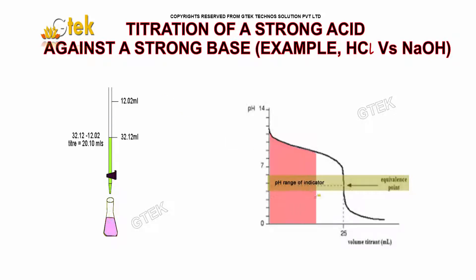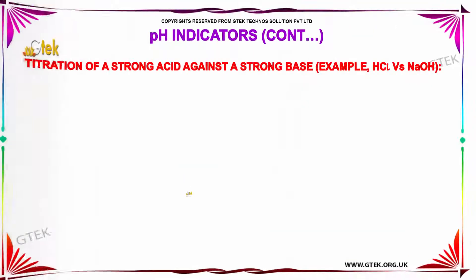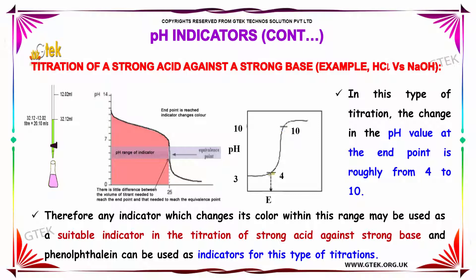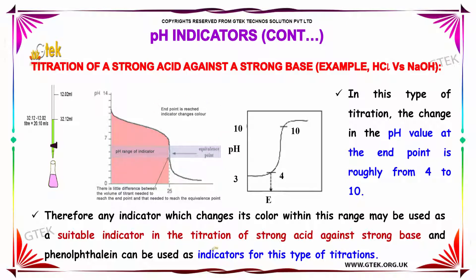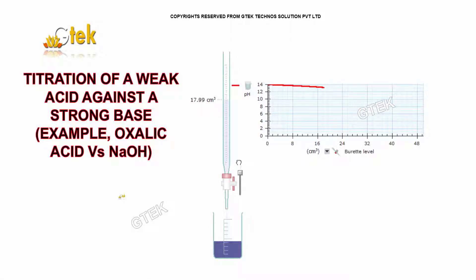In a typical experiment of a strong acid versus strong base titration, such as HCl versus sodium hydroxide, the change in pH value at the endpoint ranges roughly from 4 to 10. Therefore, any indicator which changes its color within this range may be used. Suitable indicators for this type of titration include methyl orange and phenolphthalein.